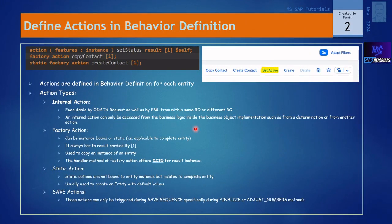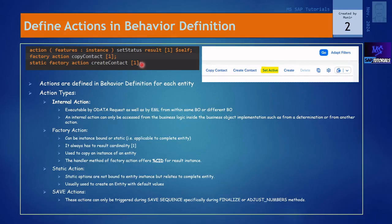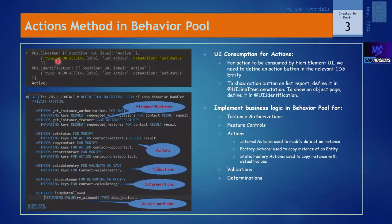Hello and welcome to my channel. In today's session we will look into the static factory action to create contact with default value. The process will be similar to what we had earlier — we define the factory action in our behavior definition, and the static action will always be used to create an entity with the default value.